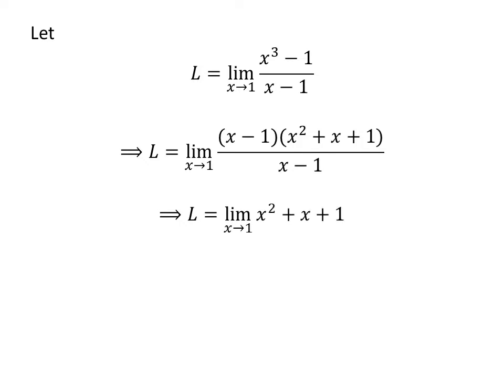Cancelling out the common factor x minus 1 in the numerator and denominator gives us L is the limit of x squared plus x plus 1 as x approaches 1.